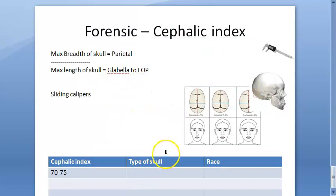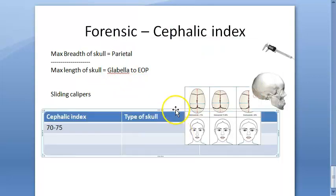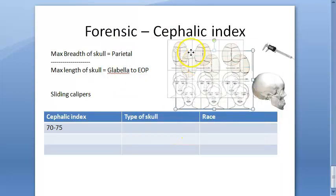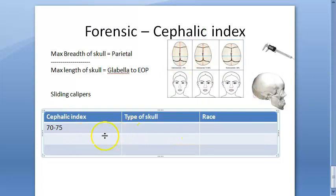Based on this you will get the index, and based on that you will classify the type of skull. The index ranges are: 70 to 75, 75 to 80, and 80 to 85.